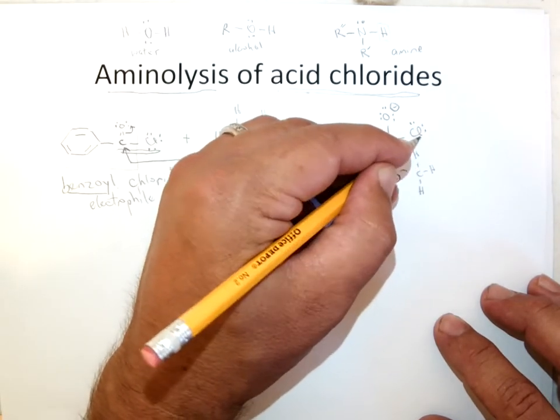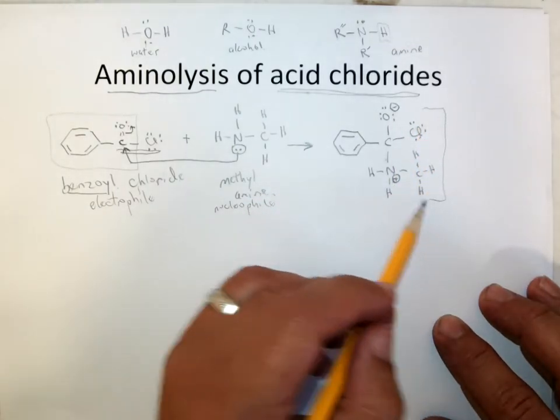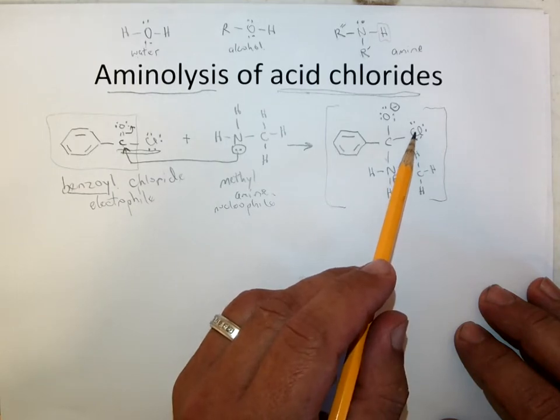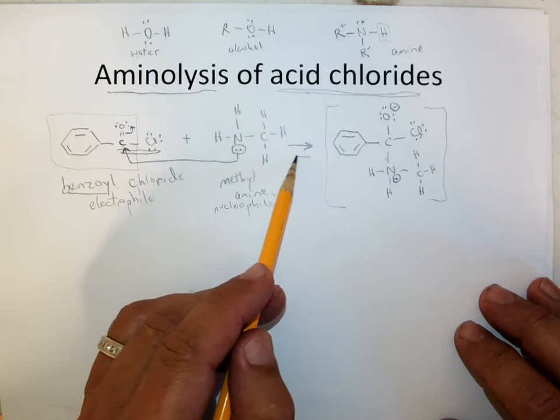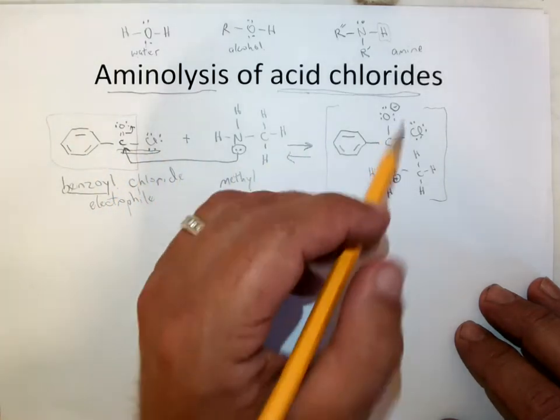And then the chlorine is still there. But as you know, again, this famous tetrahedral intermediate has got a leaving group on it that's pretty good. Now in some cases, the amine just pops back off, regenerates the starting material. But eventually, it's the chloride that pops off.